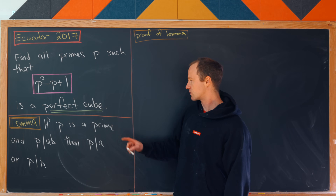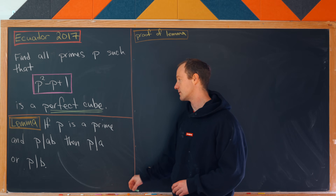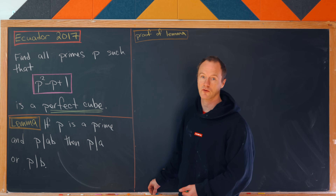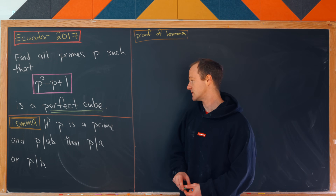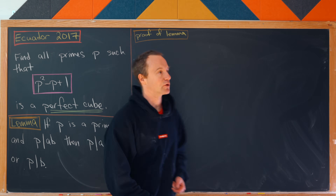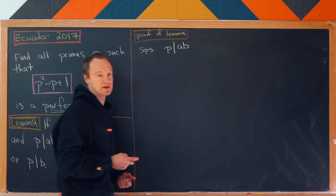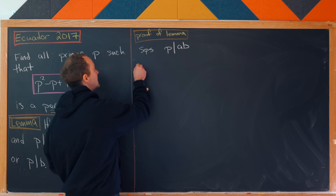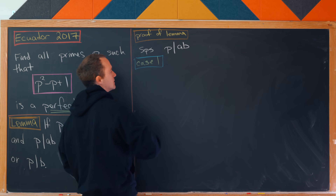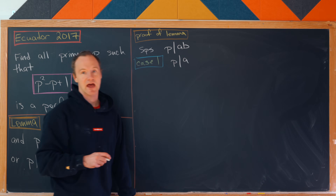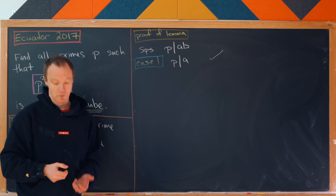To get off the ground we're going to use the following lemma which we will prove. It says that if p is a prime and p divides the product of two integers a and b, then p either divides a or p divides b. Let's get to the proof of this lemma. We start by supposing that p divides this product of a and b, and we'll break this down into two cases. Our first case is completely trivial: the case that p divides a, and of course if p divides a then we've already satisfied our conclusion.